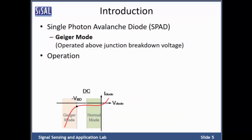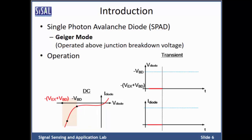Now I will introduce the concept of SPAD and its operation. SPAD is a photodiode that is biased reversely about the junction breakdown voltage, as noted in this IV curve. SPAD needs to be biased above junction breakdown voltage with an excess bias. In this condition, the p-n junction will sustain an extremely high electric field, and the avalanche effect can be triggered by a single photon.